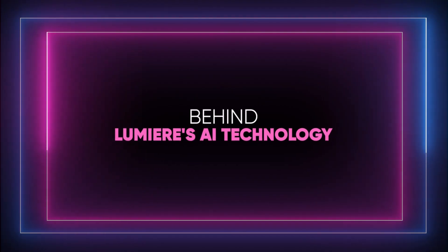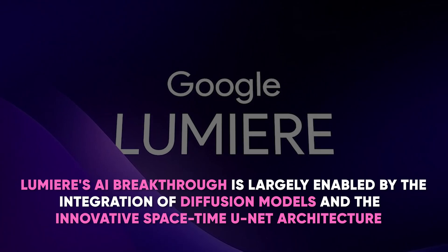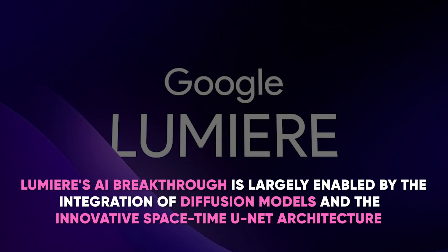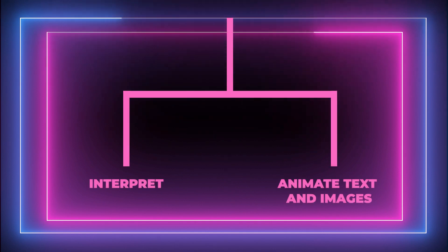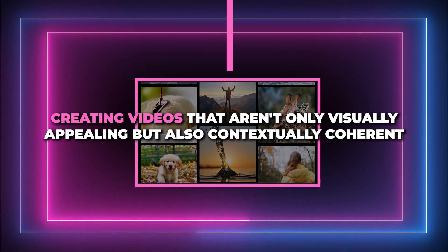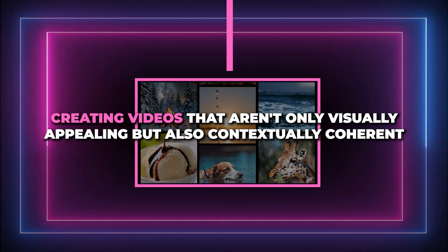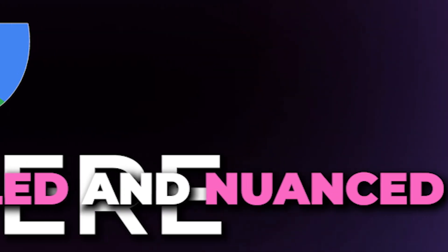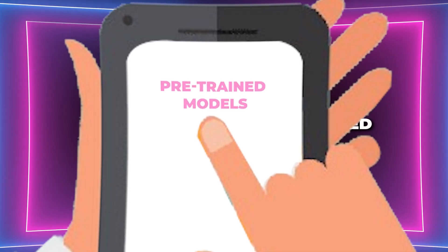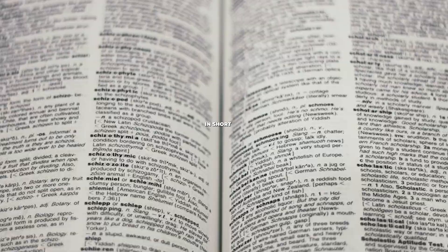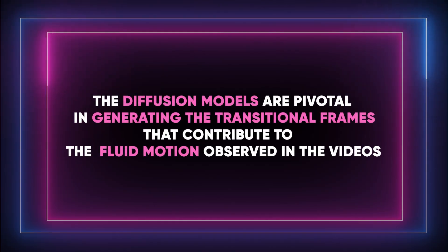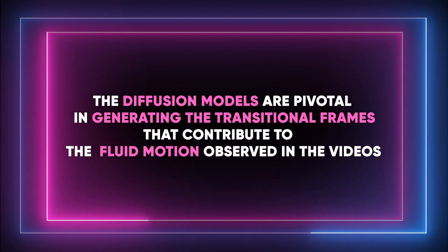Behind Lumia's AI technology, Lumia's breakthrough is largely enabled by the integration of diffusion models and the innovative space-time UNET architecture. These components work in harmony to interpret and animate text and images over a temporal duration, creating videos that aren't only visually appealing, but also contextually coherent. By leveraging text-to-image diffusion processes, Lumia AI can produce detailed and nuanced animations that closely align with the user's input. The capability is enhanced by the use of pre-trained models, which imbue the system with an understanding of a wide array of visual concepts and styles. In short, the diffusion models are pivotal in generating the transitional frames that contribute to the fluid motion observed in the videos.